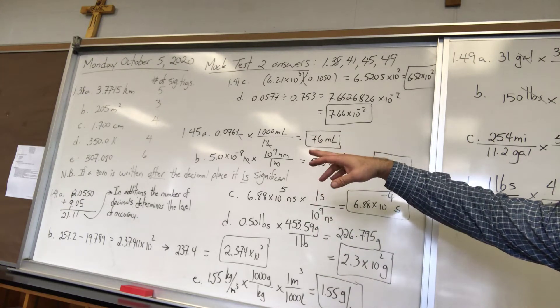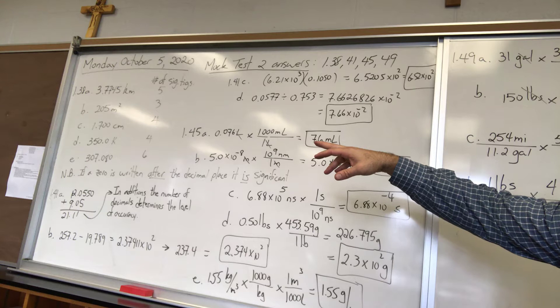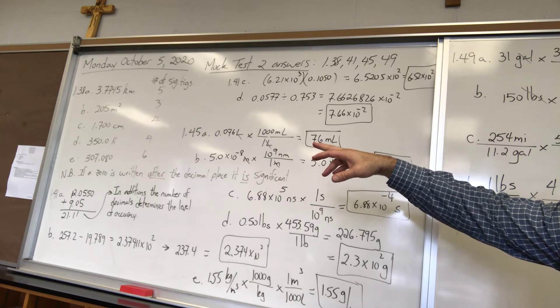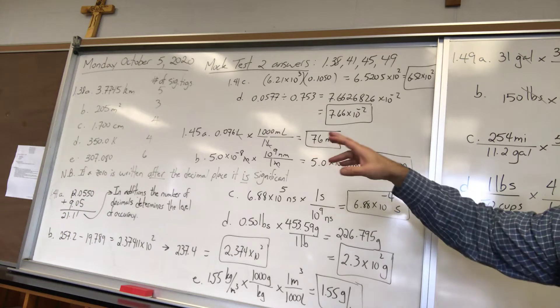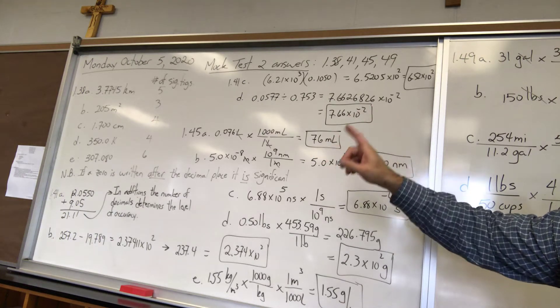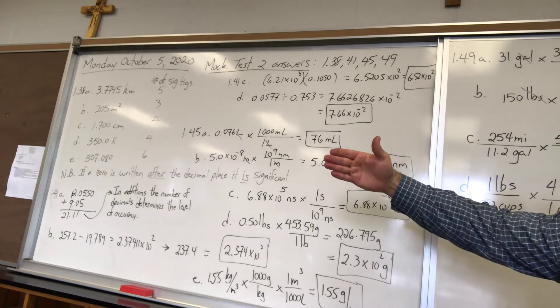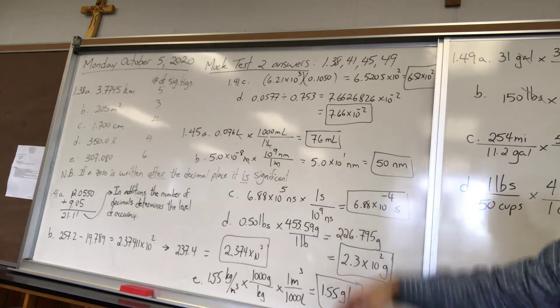205 is three significant figures. C is four significant figures. You might be tempted to not count those two zeros after the seven but they do count. If somebody writes two zeros after a number that means they've measured it to that level of accuracy so those are significant.